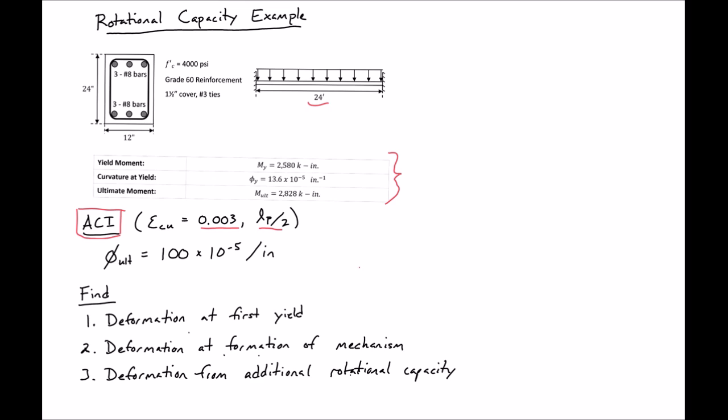In order to find our total plastic deformation we're going to need to find three different deformations. First, our deformation at first yield, which would typically be the deformation we'd find in a normal elastic analysis. Next, our deformation at the formation of a mechanism, which in our case requires three hinges to form. And then also the deformation from any additional rotational capacity. These three deformations make up our total plastic deformation.